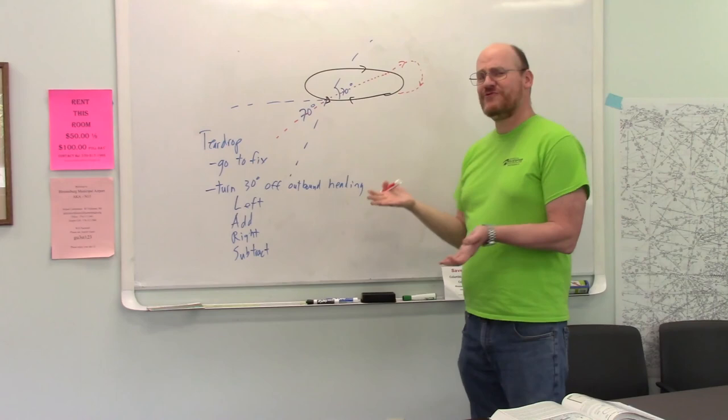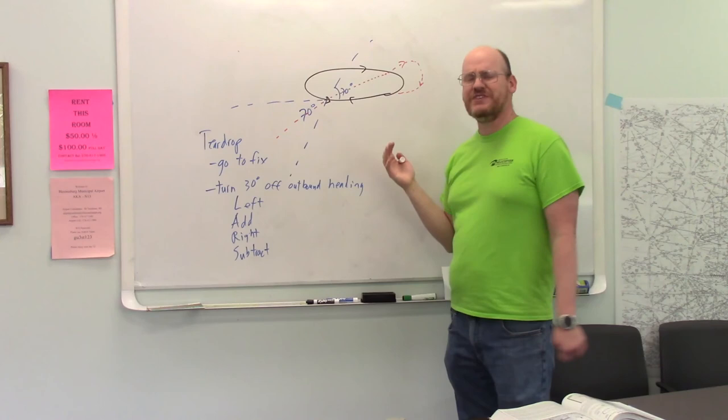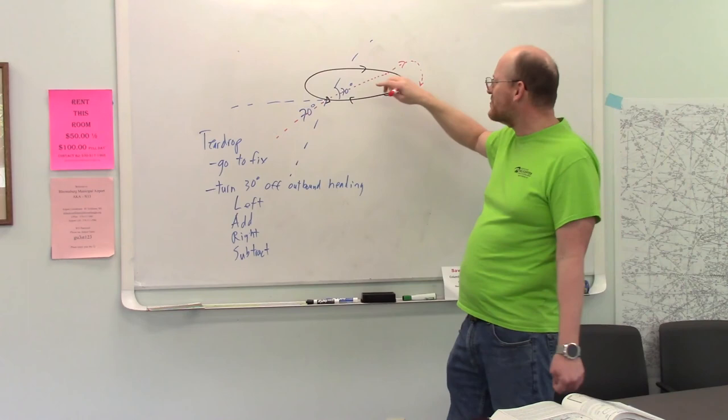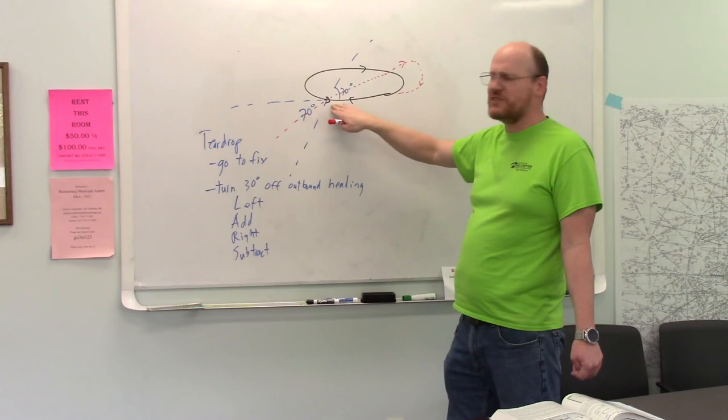You can see why this is preferred if I'm coming from the airport. If it's close, I'm going to go with a teardrop. Now, your GPS might even say hold parallel. You can ignore it. You can use any kind of entry that you want, including a teardrop. Nice thing about this, of course, it keeps you on the protected side. But you're making a turn in the normal direction. And you're not making this really absurd turn and intercepting this course really close to the fix. So that is your teardrop.